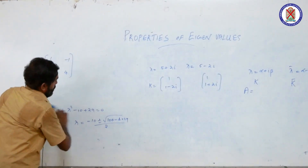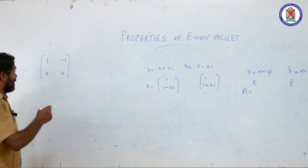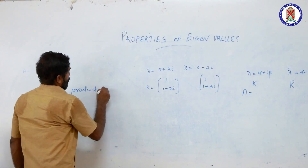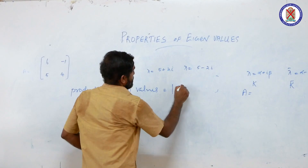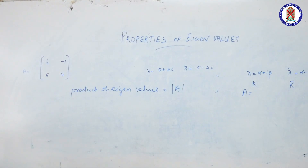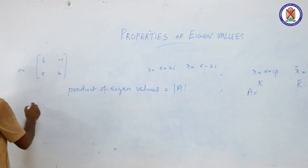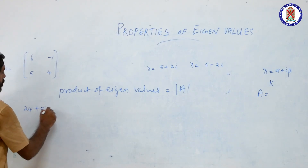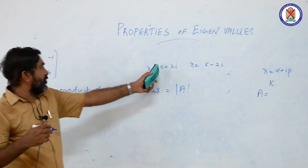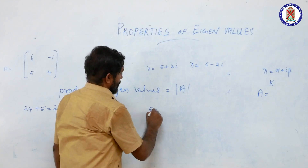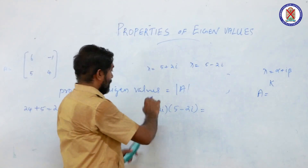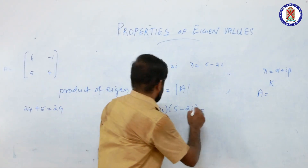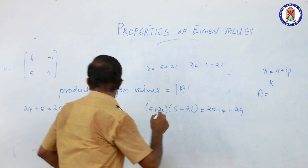The next property: the product of the eigenvalues of a matrix is equal to the determinant of that matrix. We can verify this with our example. The determinant is 24 plus 5 equals 29. The product of eigenvalues (5 plus 2i)(5 minus 2i) equals a squared plus b squared equals 25 plus 4 equals 29. So the two values match.